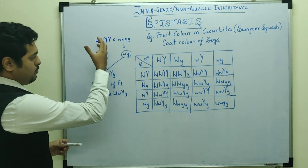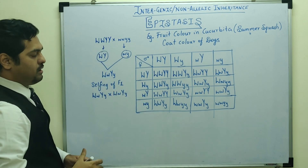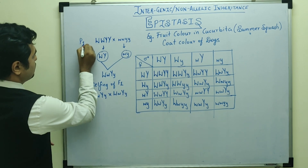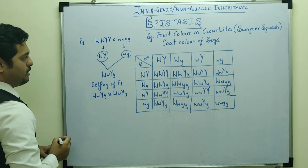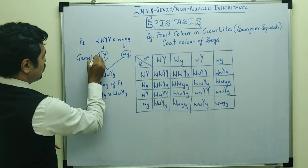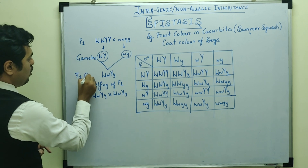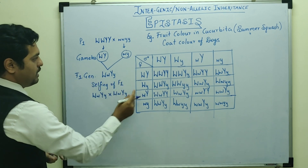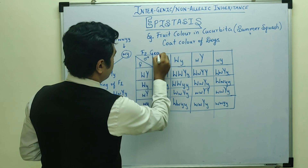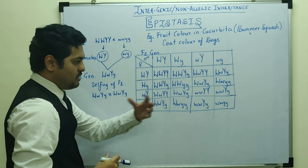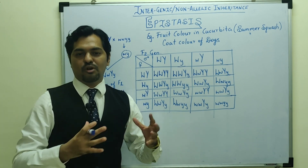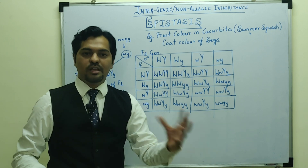Now, like normal we have a dihybrid cross to perform. This is the P1 generation where W and Y will be alleles. Gametes will fuse and the F1 generation will be made. F1 generation will then undergo selfing. This gives us the full offspring table for the F2 generation. As previously discussed, this shows a deviation from the standard Mendelian ratio.